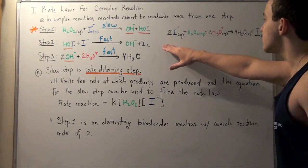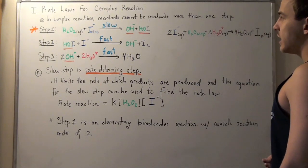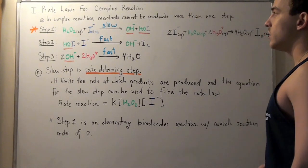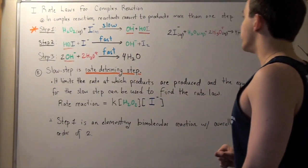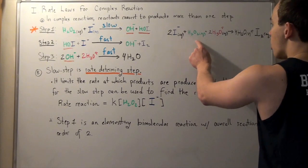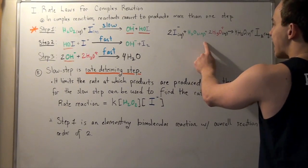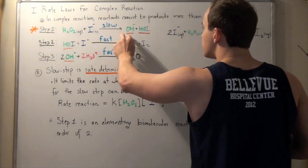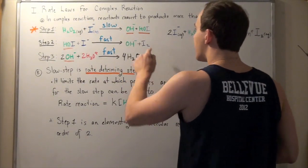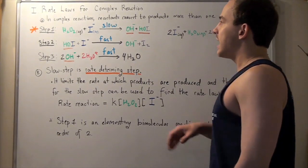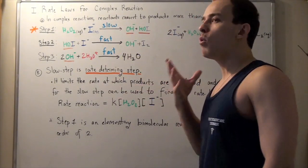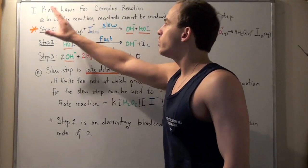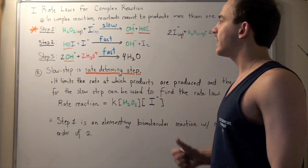So, let's break this overall net reaction into its individual steps. Step one is the following: One mole of hydrogen peroxide reacts with one mole of this guy in a slow step, producing one mole of hydroxide and one mole of HOI. Now, this slow step will be important in determining the rate law, and we'll see in a second why.